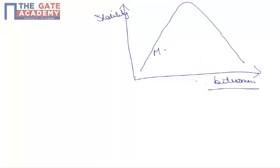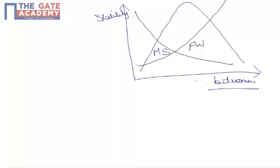If we talk about the variation of flow value, the flow value increases — the black curve represents flow value. And if we talk about the variation of void ratios with percentage bitumen, the void ratio decreases monotonically.